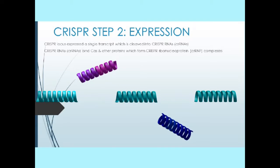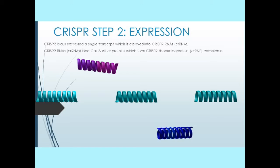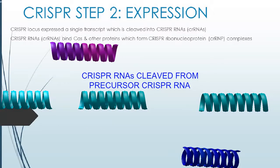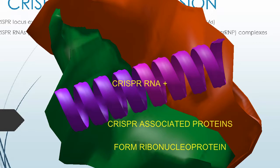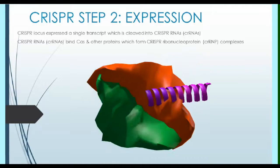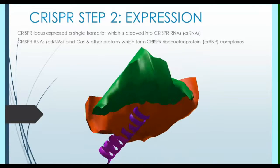This pre-CRISPR RNA is then cleaved into CRISPR RNAs, which then bind Cas and other proteins. The RNA and proteins form a ribonucleoprotein complex, a complex which possesses both RNA and protein.